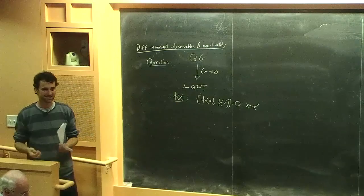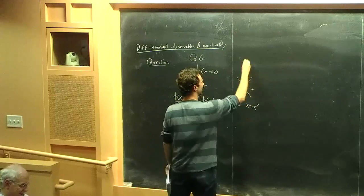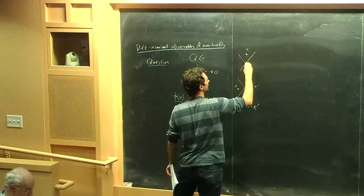Is that tilde supposed to mean non-local? It's supposed to mean that they're space-like separated. So if this is x and x prime, I would call that x greater than x prime — meaning space-like separated. That's my notation.